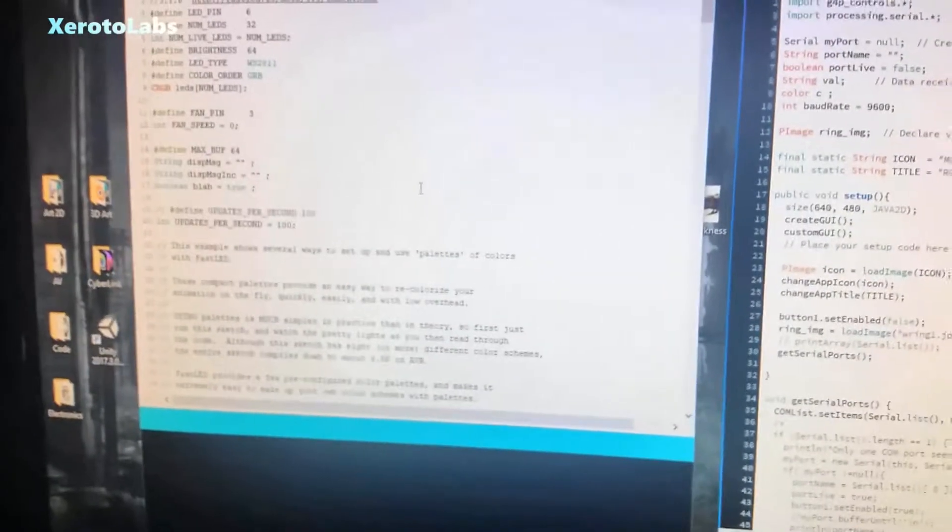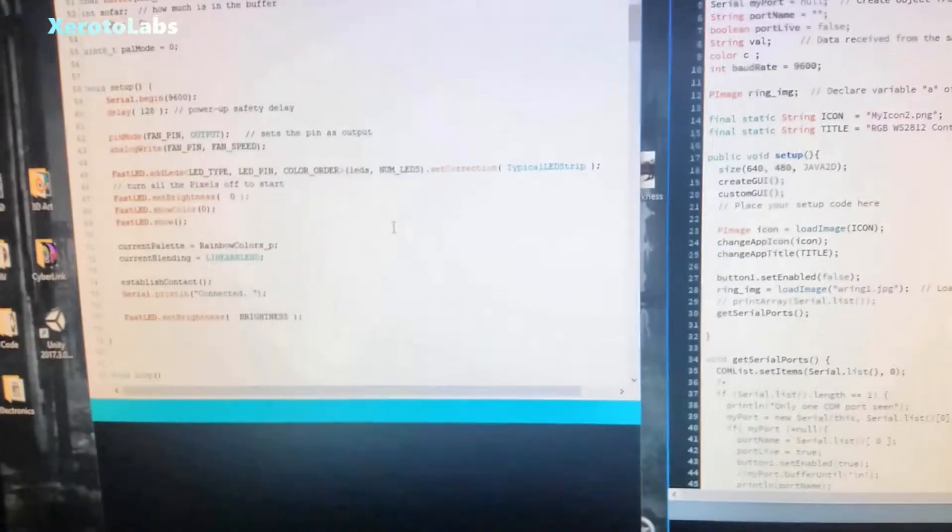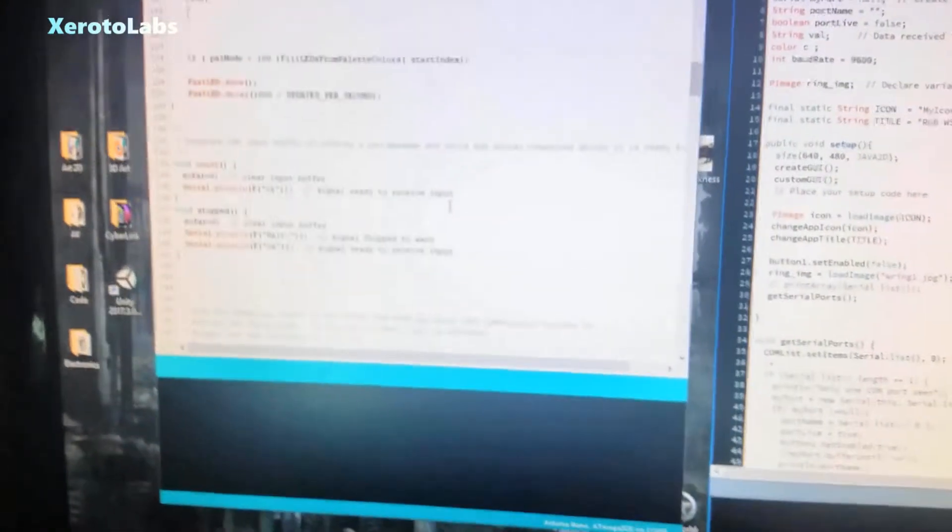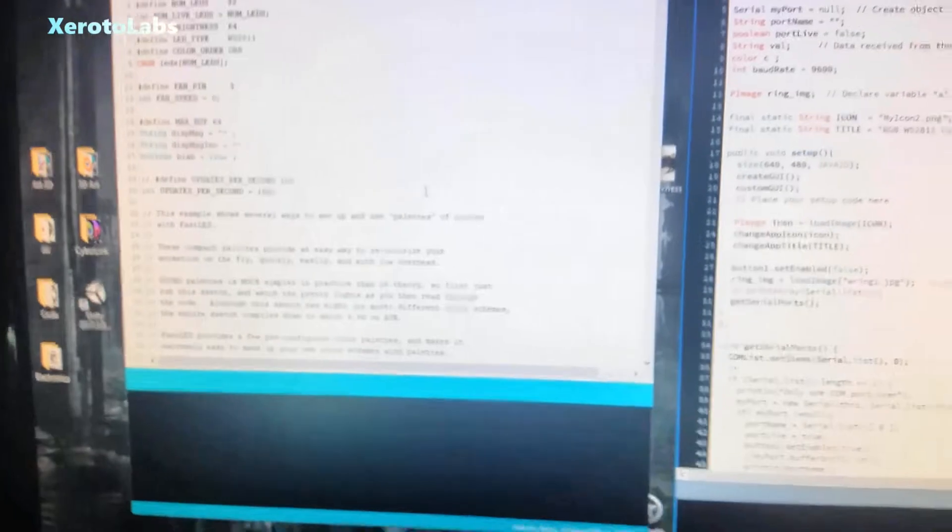And I'll post this up somewhere. I edited the sample to use basic serial commands like G-code to control the lights, then I used Processing to make a GUI.